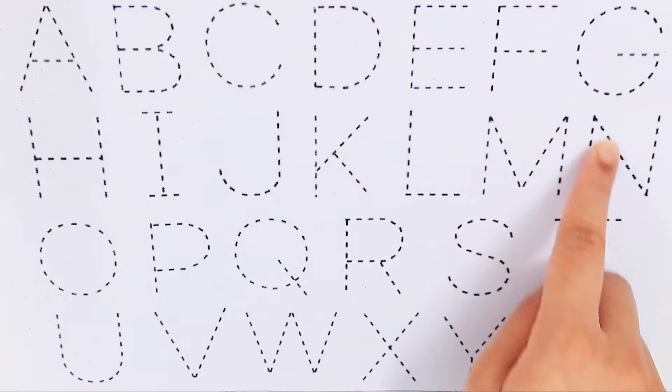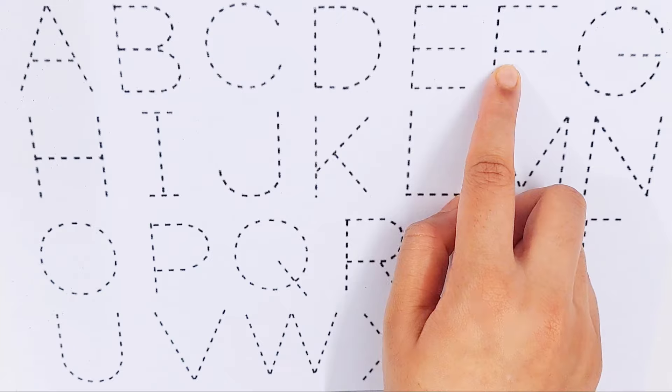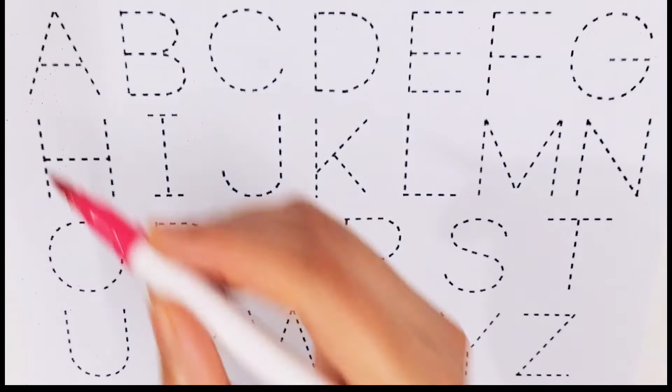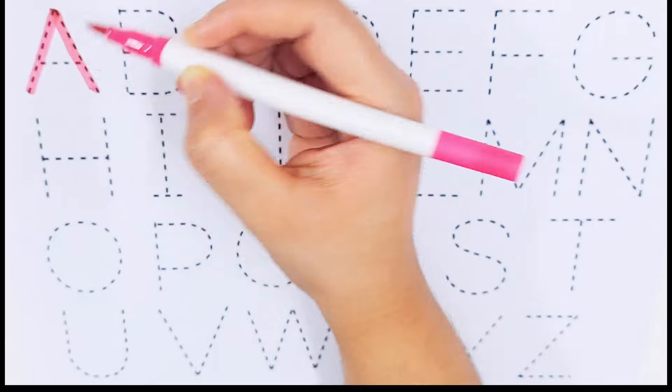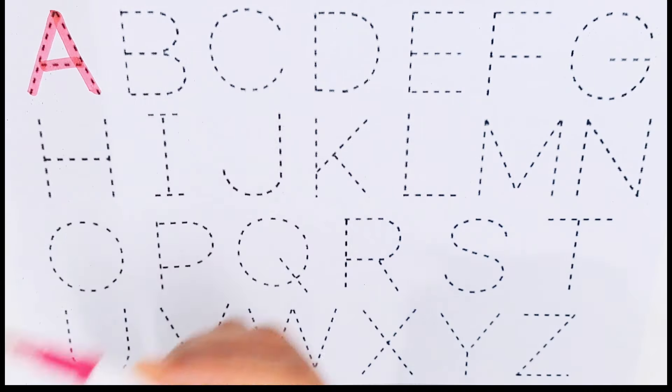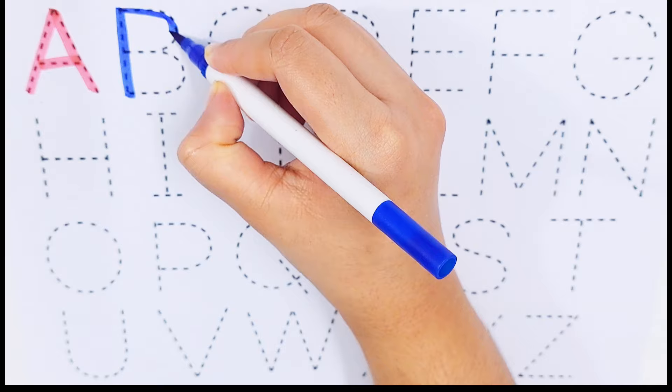Let's try to learn some alphabets: A, B, C, D, E, F, G. A, A for elevator. B, B for box.